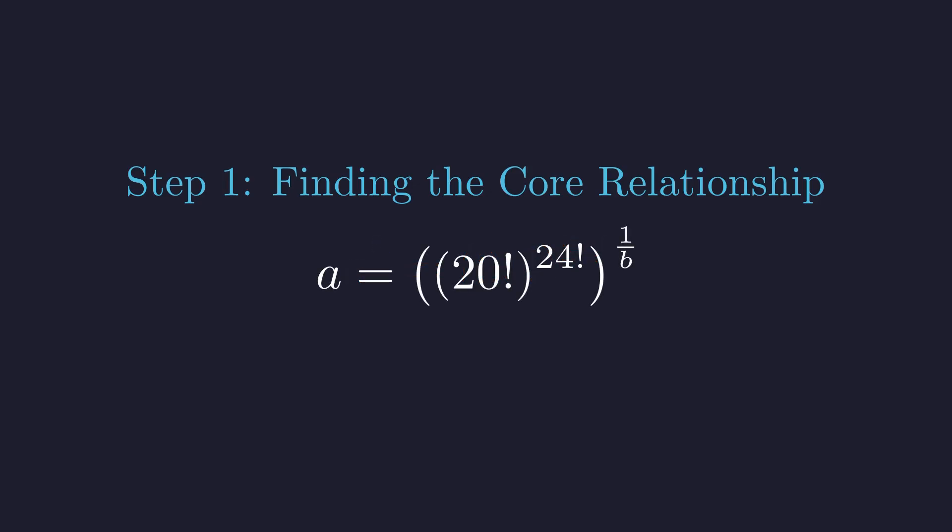Taking that B-th root gives us this relationship. Here's where the power rules come to our rescue, letting us simplify this nested exponent. So A is 20 factorial raised to the power of 24 factorial divided by B. Notice how clean this looks.